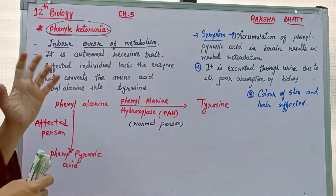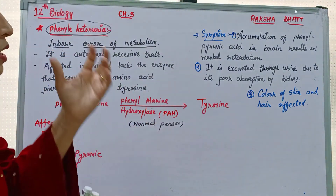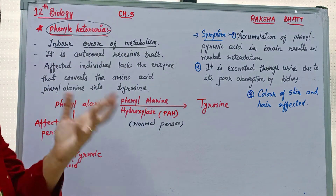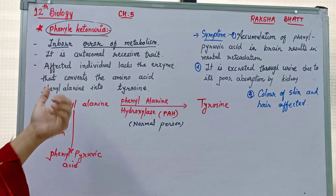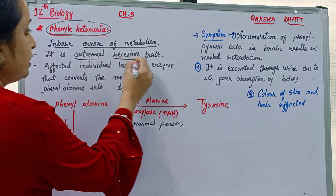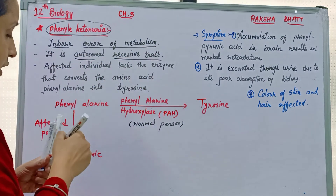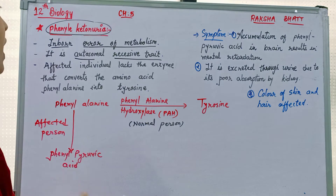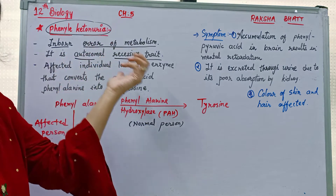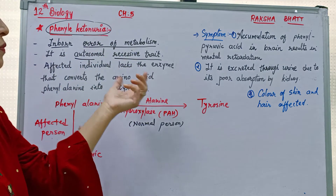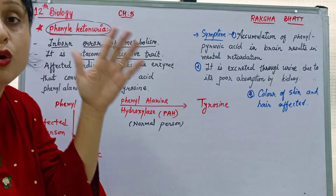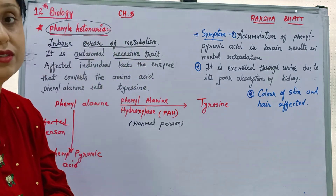First point: it is an inborn error of metabolism. Second point: it is an autosomal recessive trait. The genes for this disease are present on autosomes.